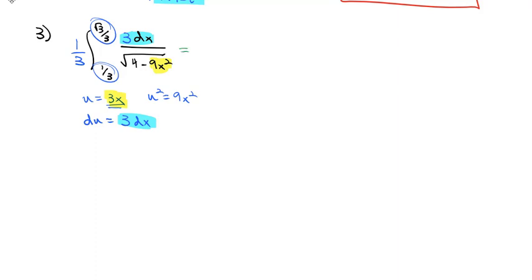1/3 times 3 is 1. Root 3 over 3 times 3 is the square root of 3. 3 dx becomes our du over the square root of 4 minus u squared.